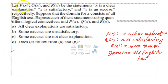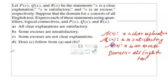The question here is: let P(x), Q(x) and R(x) be statements. P(x) is 'X is a clear explanation,' Q(x) is 'X is satisfactory,' and R(x) is 'X is an excuse.' Suppose that the domain of x consists of all English text. We have to express four statements using P(x), Q(x), R(x), quantifiers, and logical connectives.